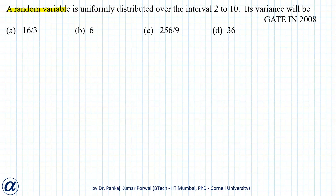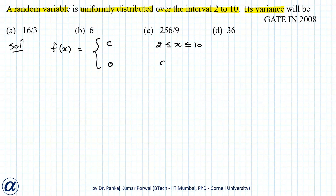In this question, we are given a random variable which is uniformly distributed over the interval 2 to 10, and we want to find its variance. The probability density function of a uniform random variable is constant when x lies in that interval and equals 0 otherwise. The value of this constant is 1 divided by the length of the interval, and the length of this interval is 8 units, so it will be 1/8. This ensures that the area under the probability density function is 1.